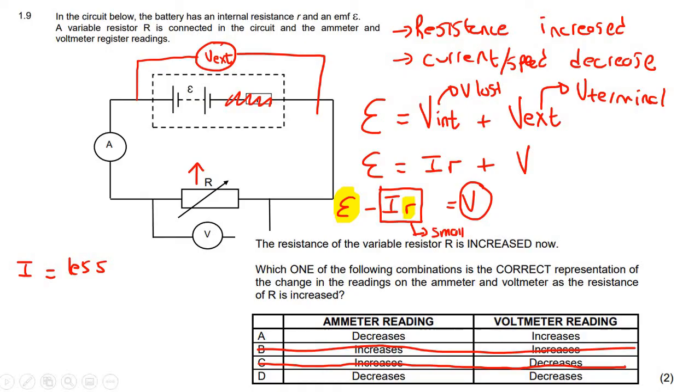That's going to become smaller. So then if you take your EMF and you minus a smaller number, then what's going to happen to this voltmeter reading?